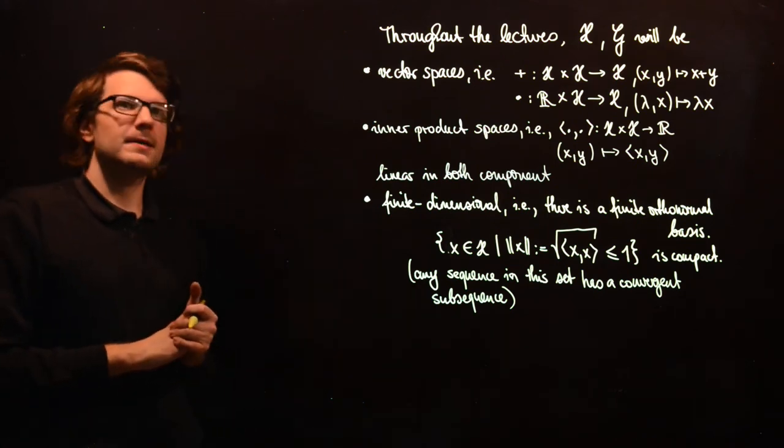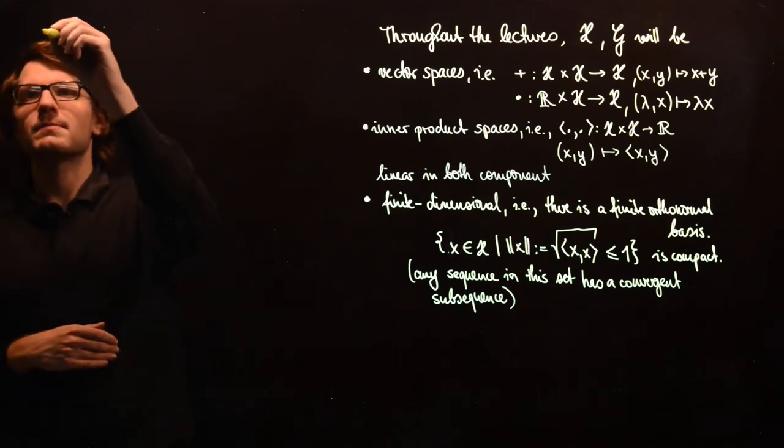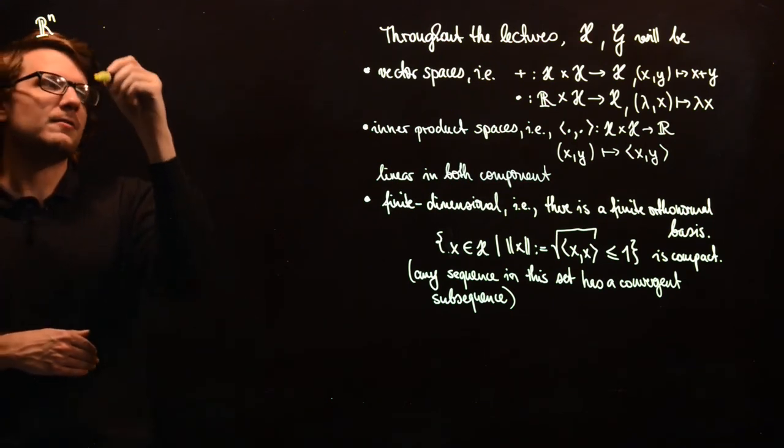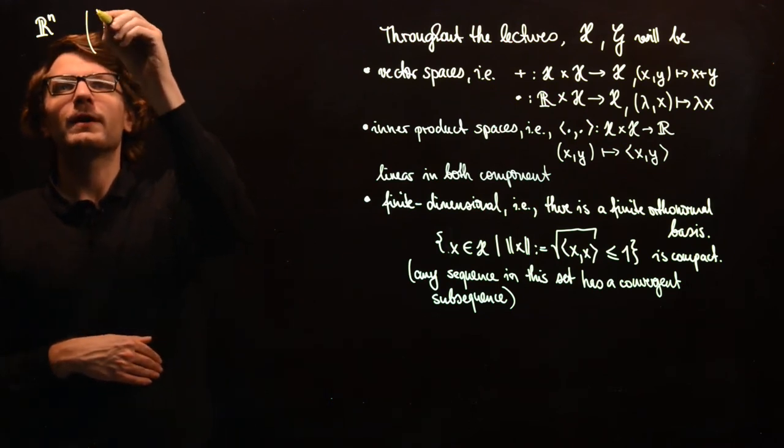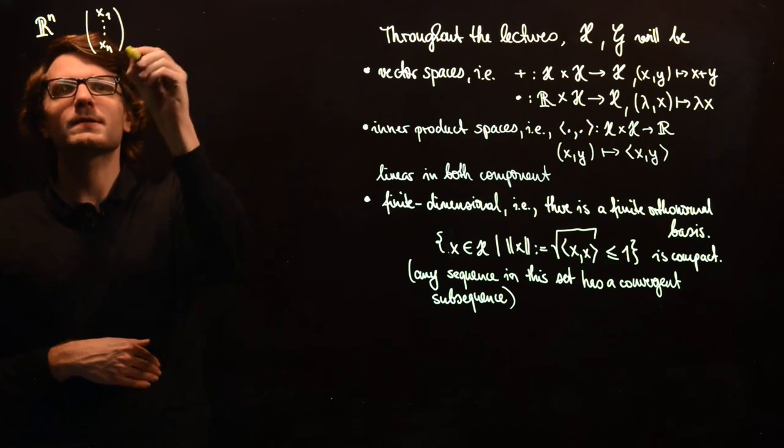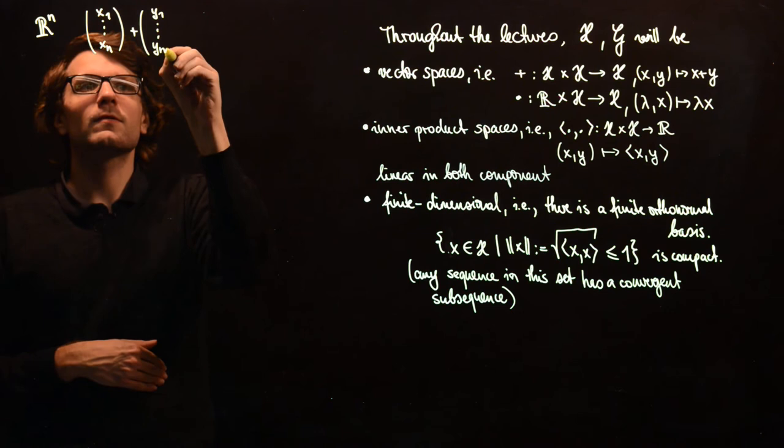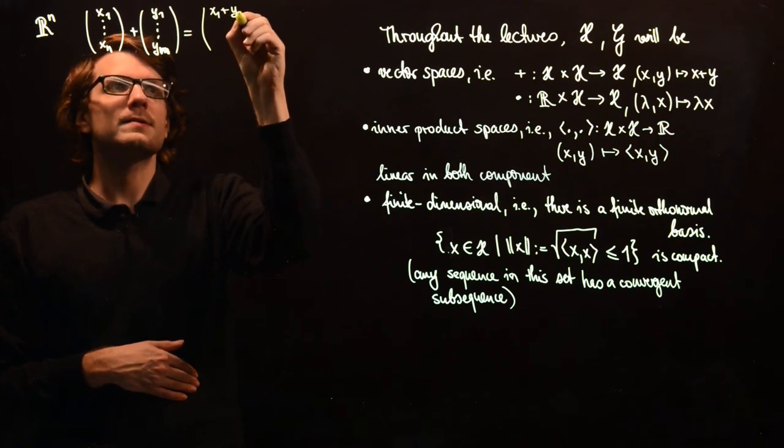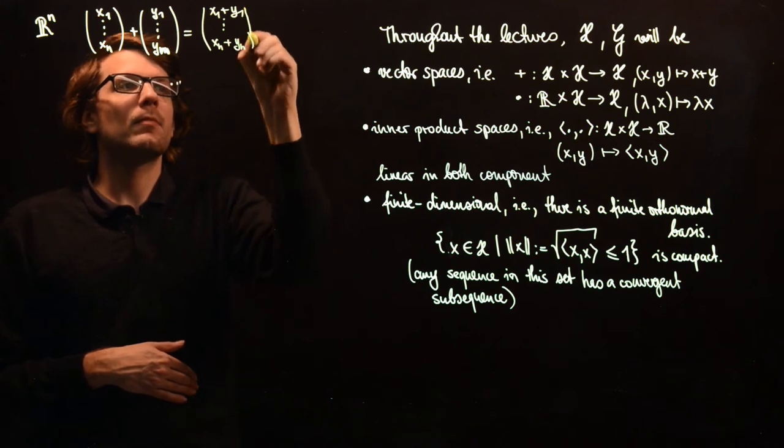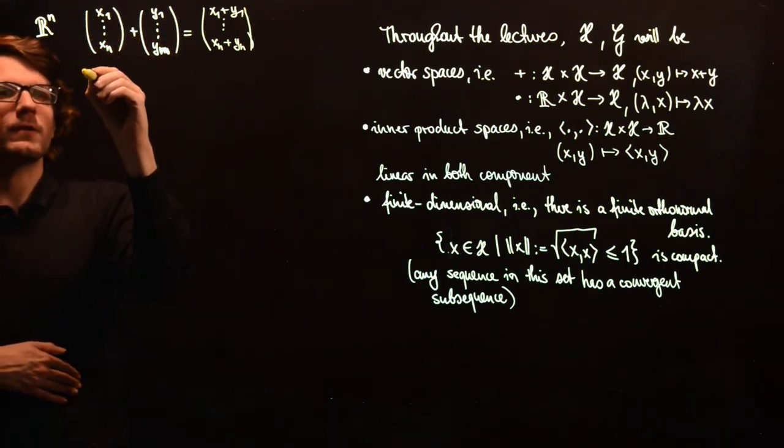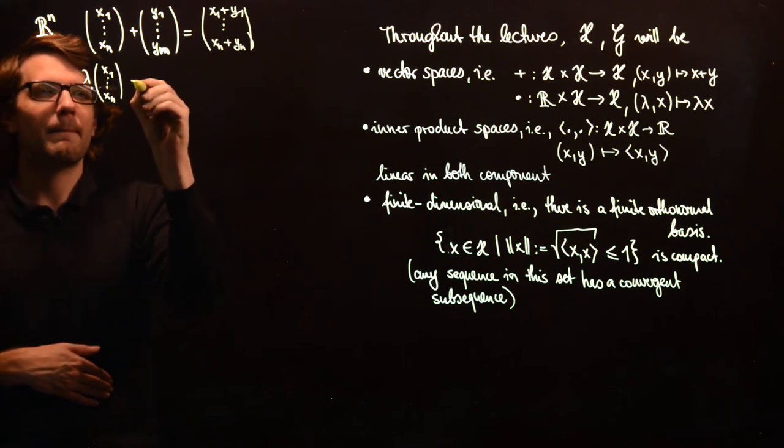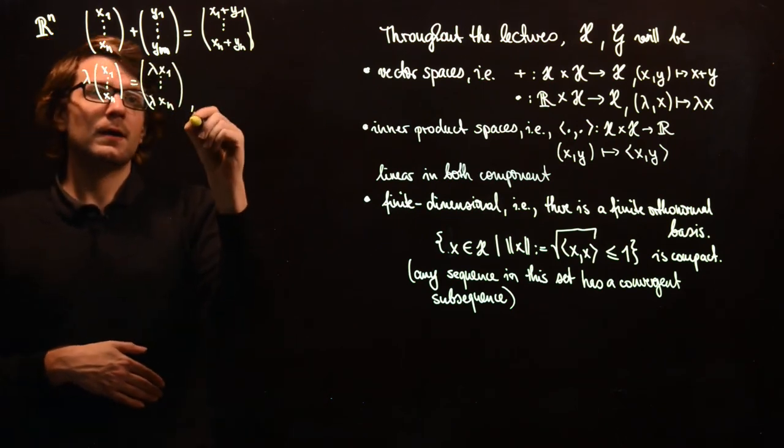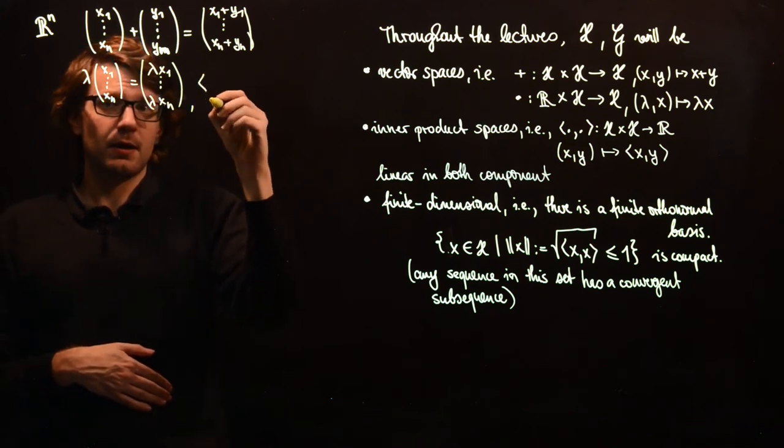So we have these properties here. Let's give some examples. The principal example here will be R^n, and this is the set of vectors. If we have two vectors x1 to xn, we define the sum obviously as the componentwise sum.